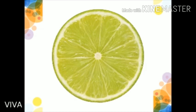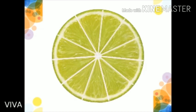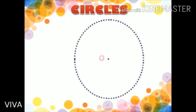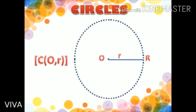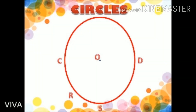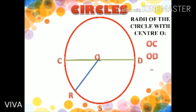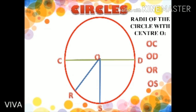A very good example of radii can be seen in the cross section of a line. Knowing the radius R and the center of the circle O, we can name a circle, which is read as a circle with center O and radius R. Hence, we have a circle with radii OC, OD, OR and OS.